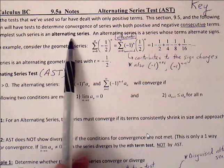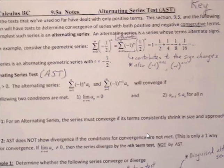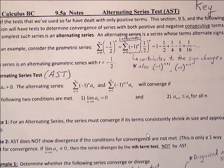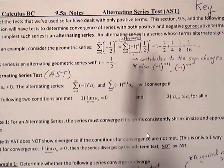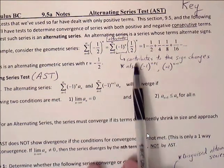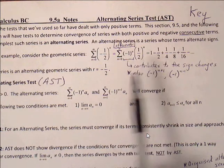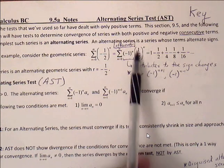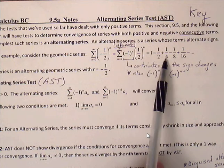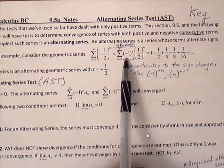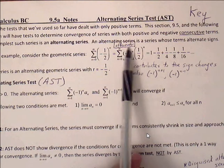The simplest such series is an alternating series — a series whose terms alternate consecutive signs. For example, consider the geometric series (-1/2)^n. It can be rewritten as (-1)^n times (1/2)^n. The (1/2)^n contributes to the magnitude of the series, while (-1)^n is only contributing to the sign — we can call this the alternator.